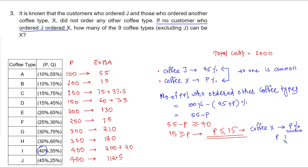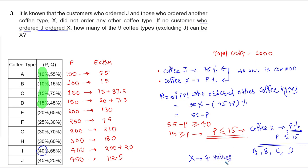Since p is less than or equal to 15, we need to find which coffee types satisfy this condition. Coffee types A (10%), B (10%), C (15%), and D (15%) all have p less than or equal to 15. These are four coffee types that can be X. So X can assume four different values, and the answer is four. This is how we solve this set.